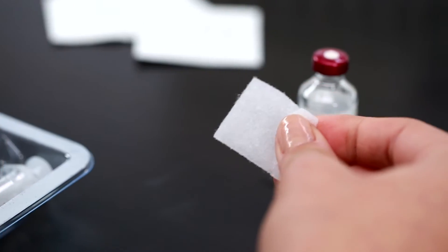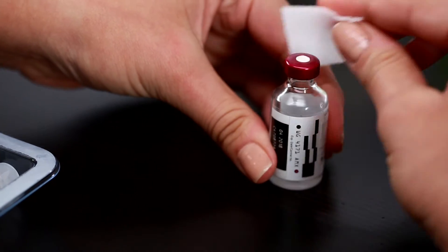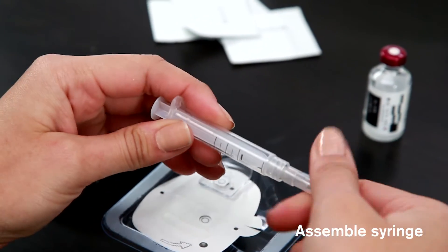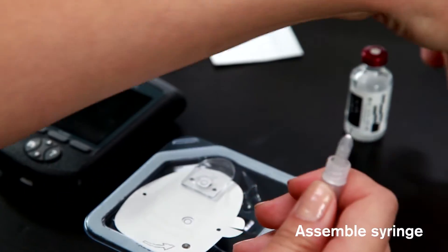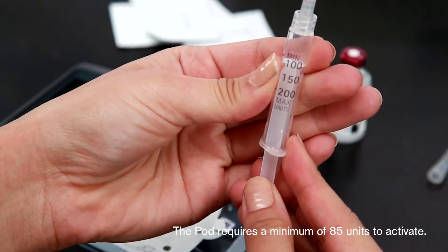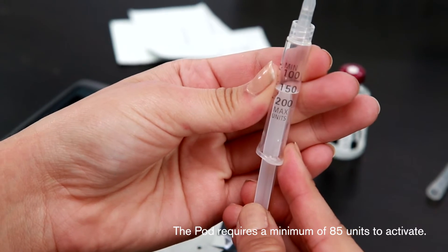To fill a new pod, use an alcohol swab to clean the top of the insulin vial. Assemble the fill syringe by twisting the needle onto the syringe and then remove the protective cap. Draw air into the fill syringe equal to the amount of insulin you intend to fill the pod with.